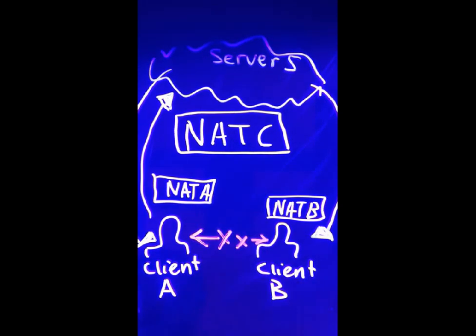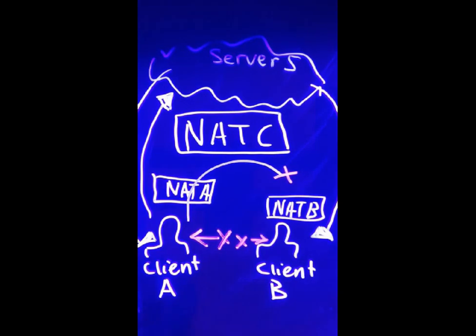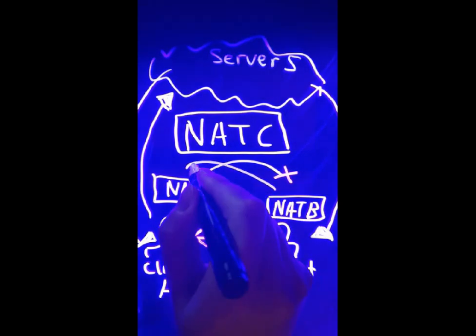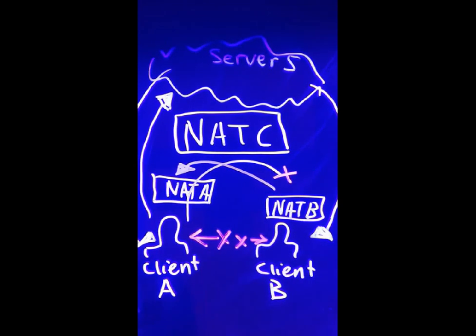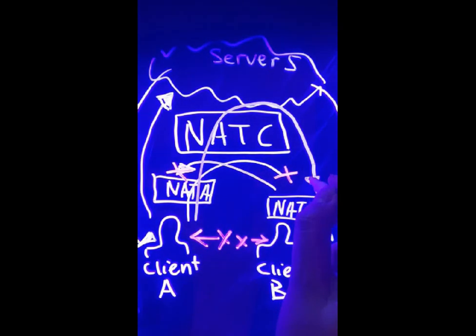Multiple layers of NAT are more complicated, where the process of UDP hole punching may include extra steps of NAT hairpin translation to clear the multiple layers of security barriers that NATs provide.